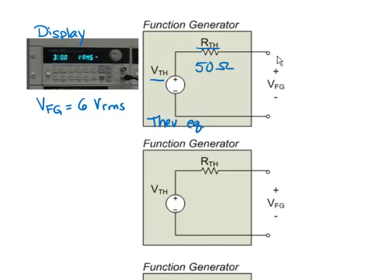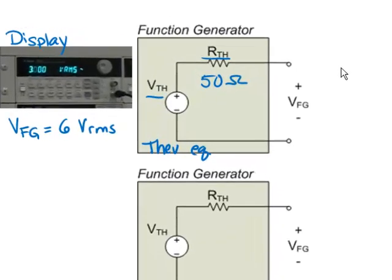In this first case, let's assume the output is an open circuit. Since there's no current going into that circuit, the output voltage VFG would just be equal to the Thevenin voltage VTH.